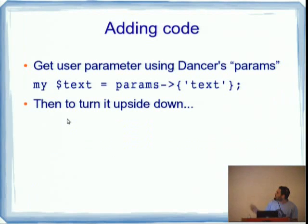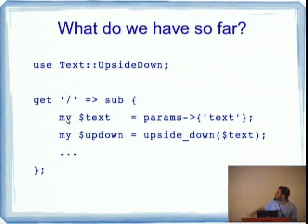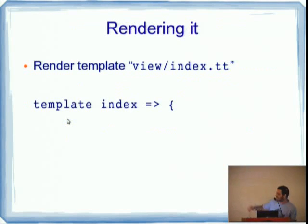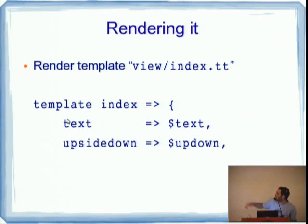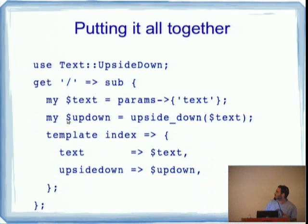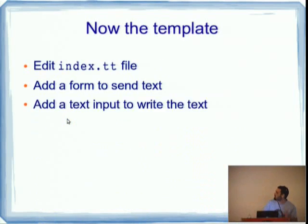We're going to add the code, get a parameter using params. The parameter is called text. We get it. We turn it upside down using the upside down subroutine. And then we put it inside the get route. And we render it using the index.tt. We call a template. It takes index and adds the tt. We give it the text, we give it the upside down text.